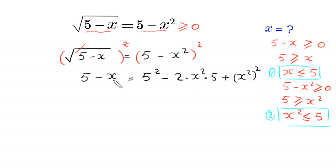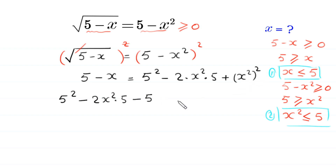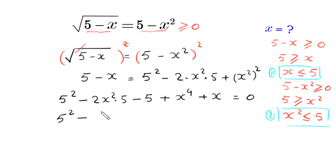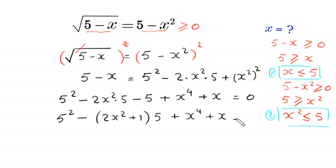We move the 5 and the negative x to the right hand side. Writing 5 squared first, then minus 2 times x squared times 5, the positive 5 becomes negative 5, the x squared whole squared becomes plus x to the power 4, and the negative x becomes plus x, all equal to 0. From these terms we can factor out negative 5 as a common factor, leaving plus x to the power 4 plus x equal to 0.